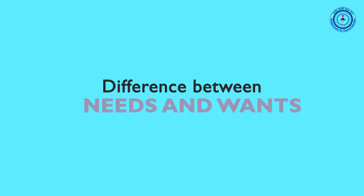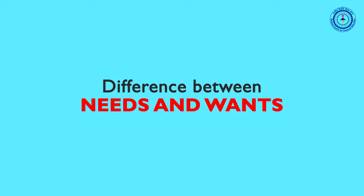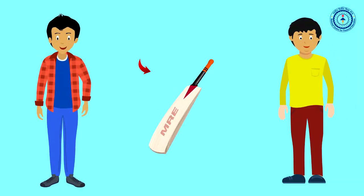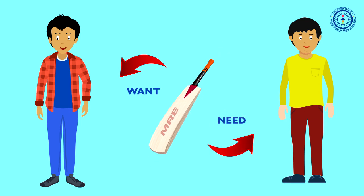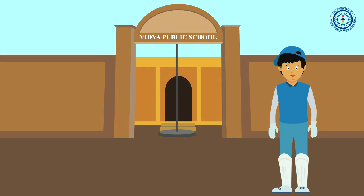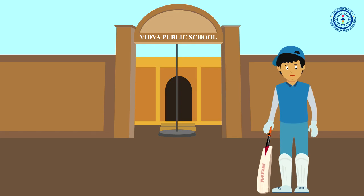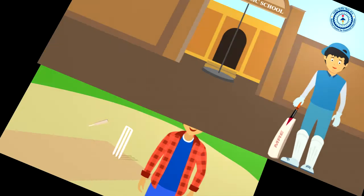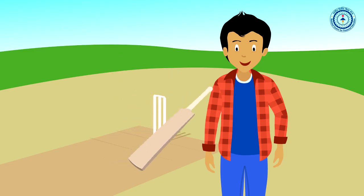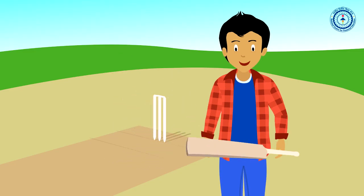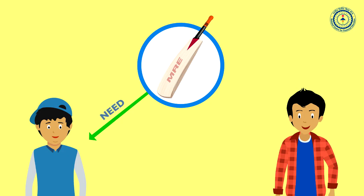Have you all understood the difference between needs and wants? That's wonderful. However, sometimes one person's want may be another person's need. For example, Praveen's friend Kevin is on the school cricket team and hence needs a good quality branded cricket bat. But Praveen is an amateur player and can use his old, locally made bat. So a branded cricket bat is a need for Kevin, but a new branded cricket bat for Praveen is a want.